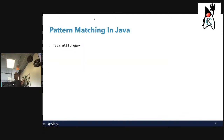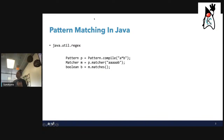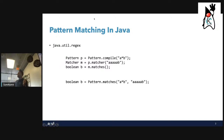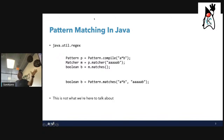Pattern matching in Java — we've had it for quite some time via java.util.regex, introduced in JDK 1.4, where you create a pattern, a matcher, and call matches() to generate a boolean. But that's not what we're here to talk about. We're talking about patterns in the language itself, not APIs or libraries.